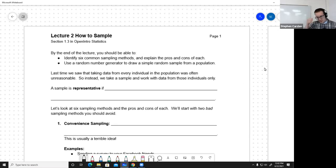One of the big ideas from lecture one is that we've got this whole population of individuals or things we'd like to know something about, but we can rarely get access to all of them. So we have to take a sample out of that population and just work with that. Lecture two is about how to sample. We're going to look at six of the most common sampling methods and the pros and cons of each.